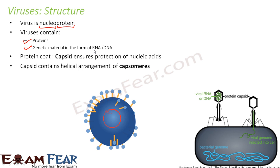In order to protect this genetic material, there is a protein coat which is present and that is known as capsid. You can see this black colored structure here — that is the protein capsid, which is protecting this coiled genetic material inside. Since there is no cell or cell membrane, this protein cover called capsid provides protection. The capsid contains a helical arrangement of identical units, and each unit is known as a capsomere. So the capsid is made up of many small similar repeating units called capsomeres.